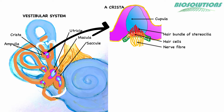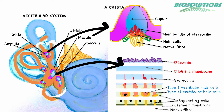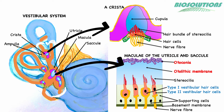The ampulla contains a saddle-shaped ridge of tissue called the crista. This is the structure of a crista from the ampulla, having hair cells and a gelatinous structure called the cupula. In the macula, a delicate otolithic membrane covered by calcium carbonate crystals, or otoconia, or ear rocks, envelops the entire macular surface.